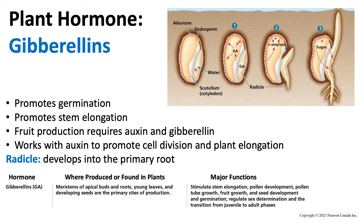When a young seed is in the proper environment to start growing, the hormone gibberellin is released inside the seed. The release of gibberellin stimulates digestive enzymes that break down the endosperm. The endosperm is broken down and we start to see the radicle forming, which will grow into the cotyledons and roots. Essentially, gibberellin is promoting that early growth and germination.